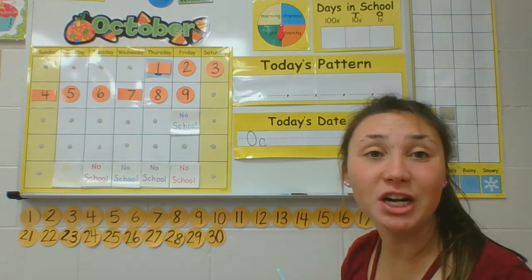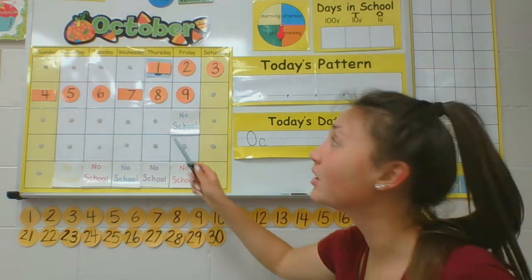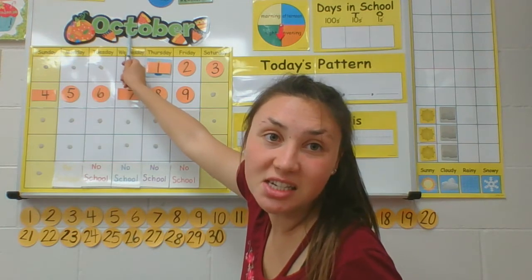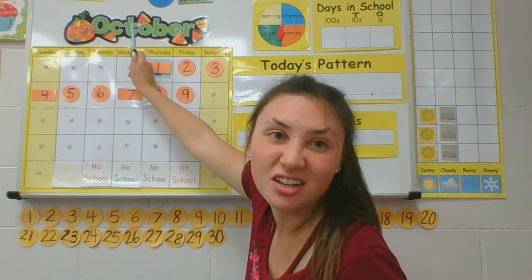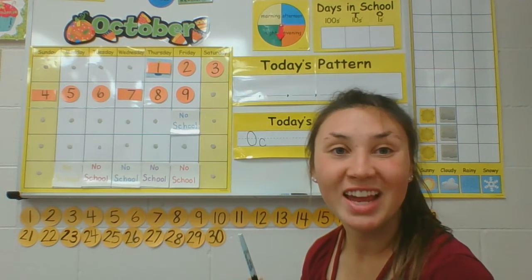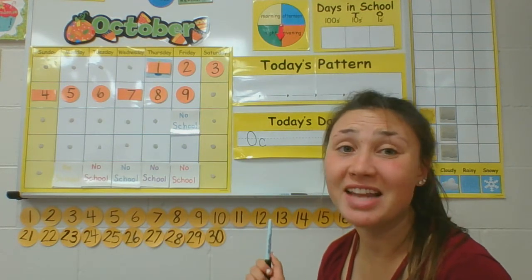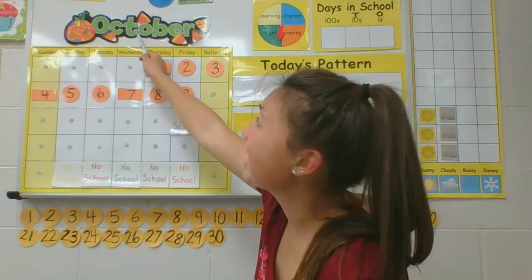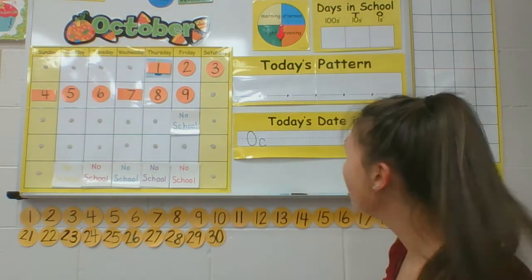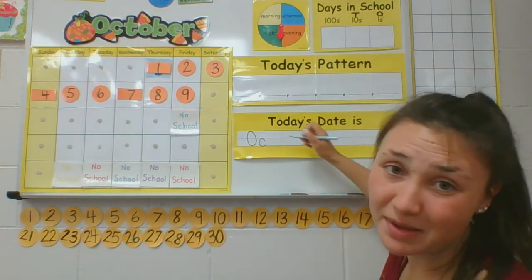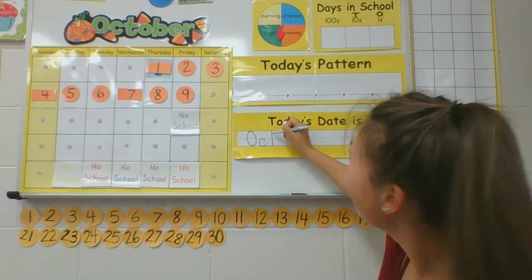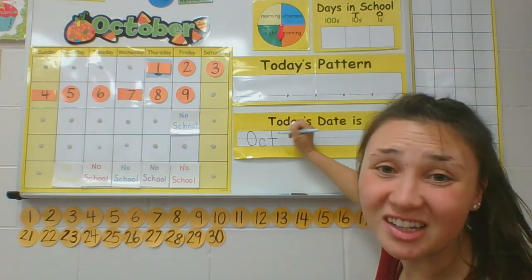What comes after the C in October? T, t, t. What makes that T sound? Yep, a T. A T is next. We'll just make the regular T, not that fancy T with the tail. To make a regular T, you go from top to bottom and cross on the middle line.